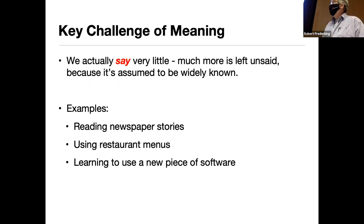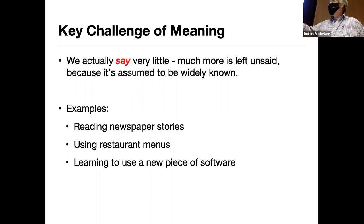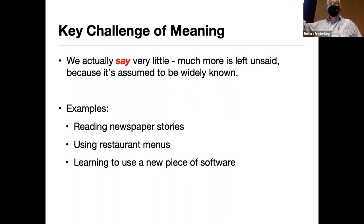One of the things that makes meaning really hard is that people say very little when they communicate. They assume the person they're talking to is an adult human being who knows what fingers are and how to walk. So there's all this information they assume you already know. A newspaper story might say Biden talked to somebody at the Capitol, but they don't tell you who Biden is, what the Capitol is, or how governments work — just a little extra information on top of all the things you already know.